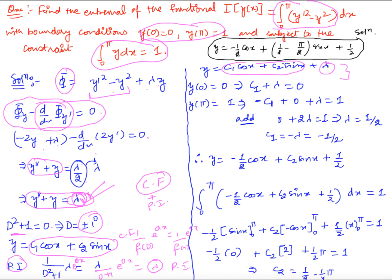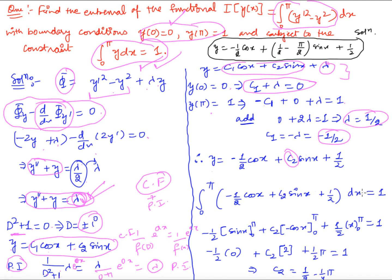We have three constants c1, c2, and λ to determine. Applying y(0) = 0 gives c1 + λ = 0, and y(π) = 1 gives −c1 + λ = 1. Adding these: 2λ = 1, so λ = 1/2 and c1 = −1/2. The solution so far is y = −(1/2)·cos(x) + c2·sin(x) + 1/2. Using the constraint — the integral from 0 to π of y·dx = 1 — we integrate term by term to find c2, and substituting back gives the required final solution.